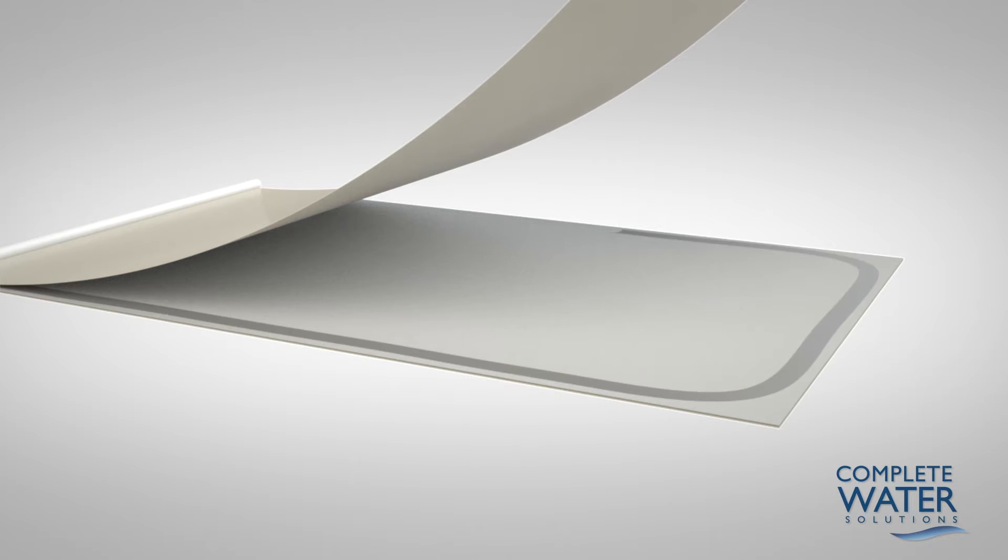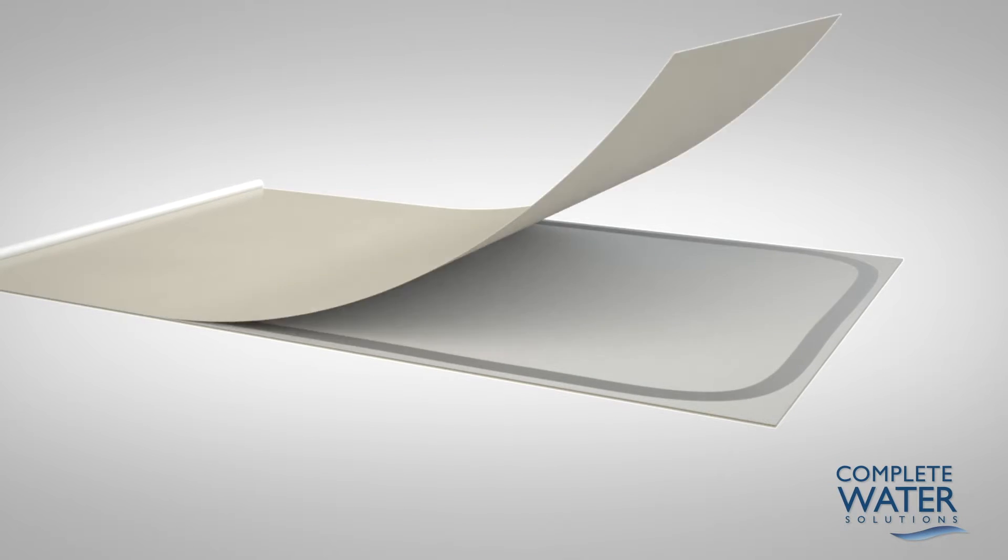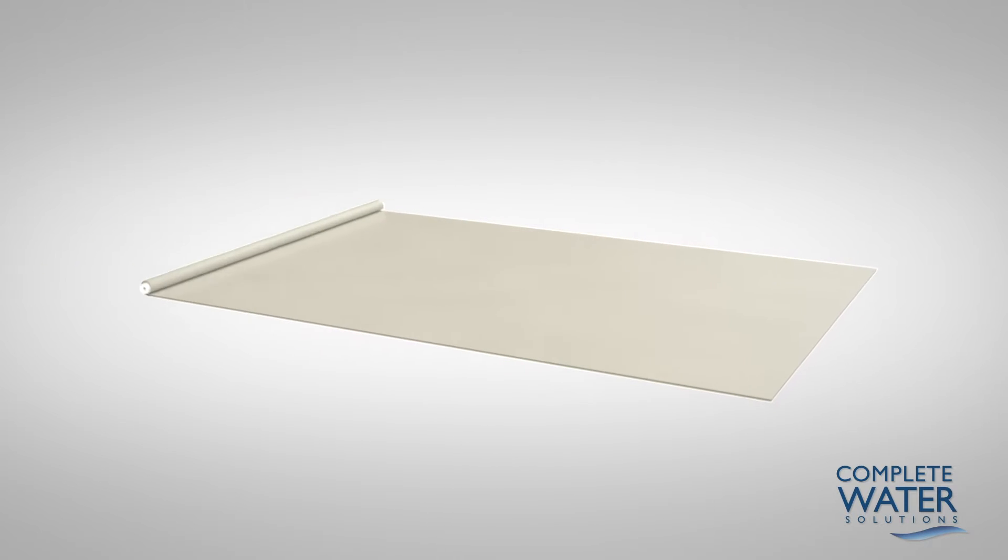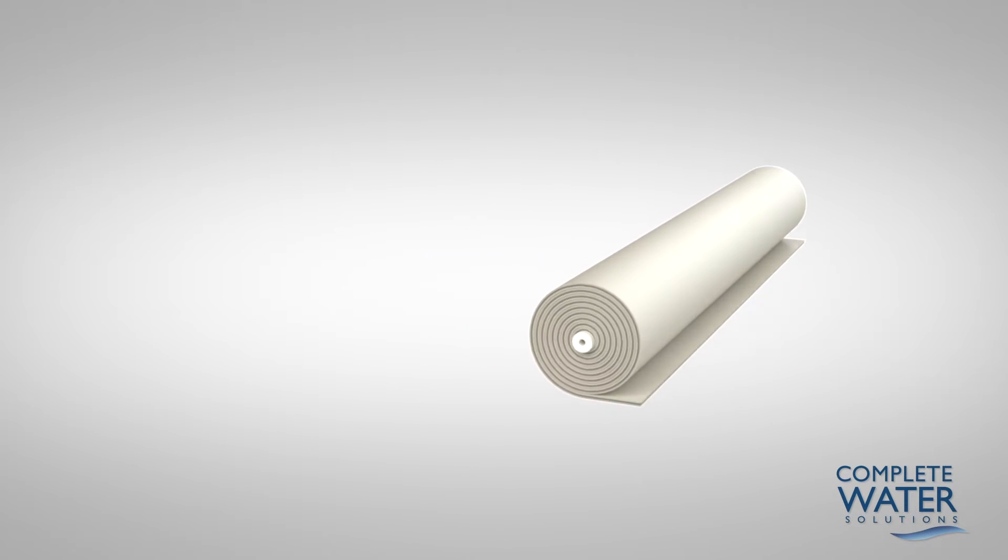The back of the membrane is glued along each of the three exposed sides and rolled around the core tube, also known as the permeate collection tube.